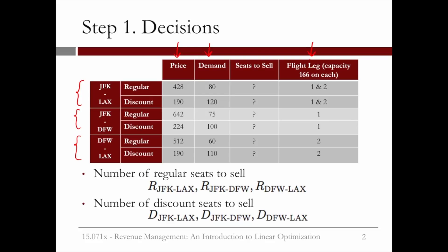We also know that we have a capacity of 166 seats on our plane for each leg of the trip. There's room for 166 passengers on the plane from New York to Dallas, the first leg of the trip. Then the passengers with a final destination of Dallas will get off the plane, and the passengers flying from Dallas to LA will get on the plane. On the second leg, flying from Dallas to LA, we also have a capacity of 166 seats. So we need to remember that the passengers flying from New York to LA will take up capacity on both legs of the trip, while the other types of passengers will only take up capacity on one leg of the trip.